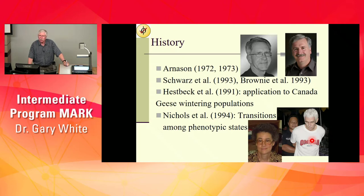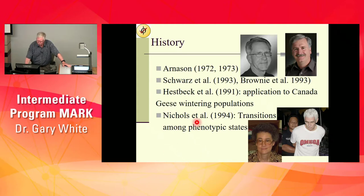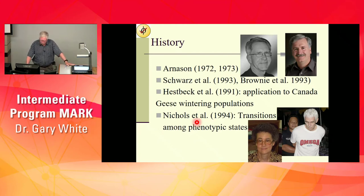The multi-state model development was prompted by a Hespeck Canada goose study. Cabell Brownie was called in to help develop the multi-state model for that. Nichols was the one who said there's got to be some new theory developed to make this work — so those are the key people in the background.